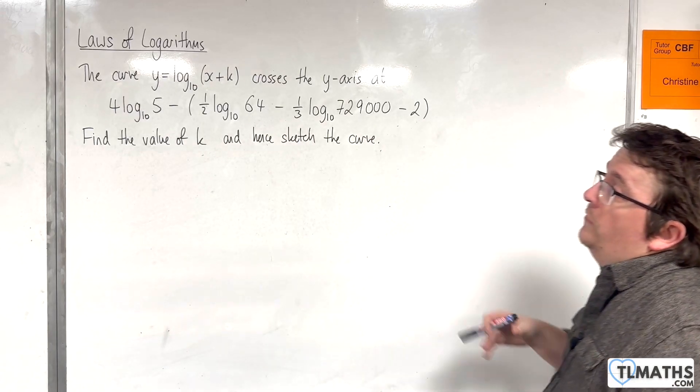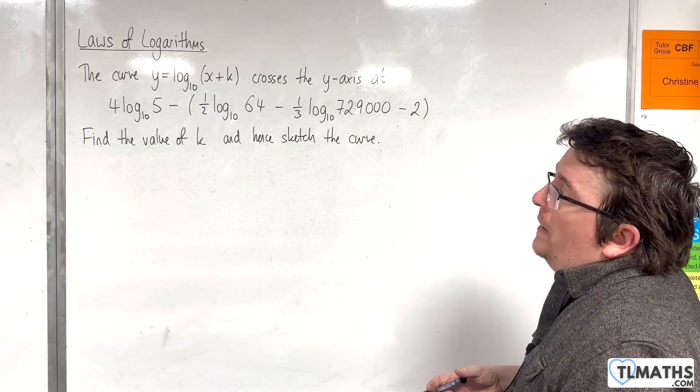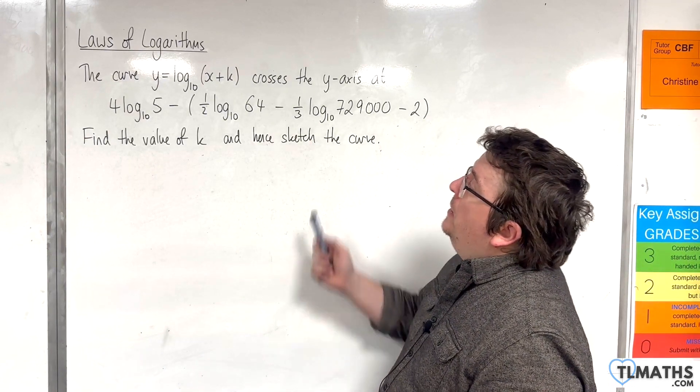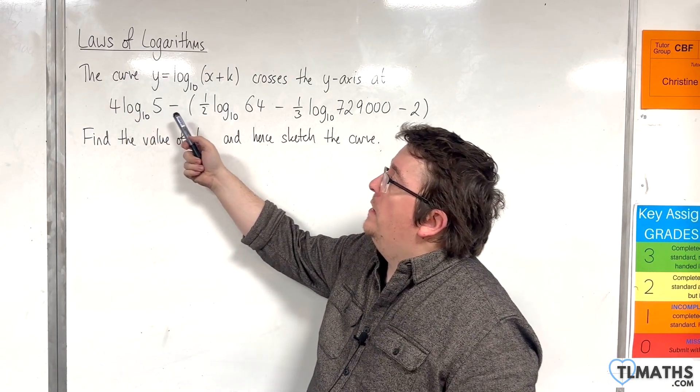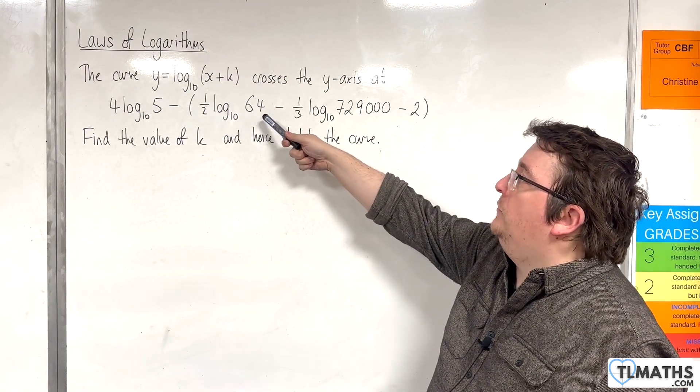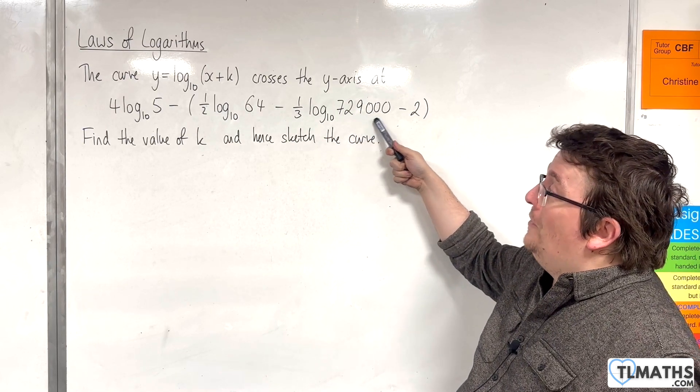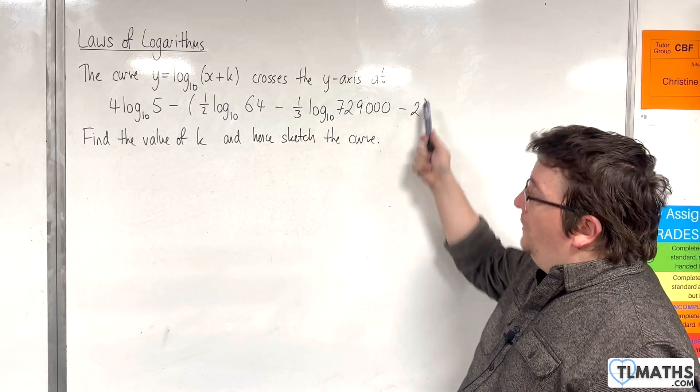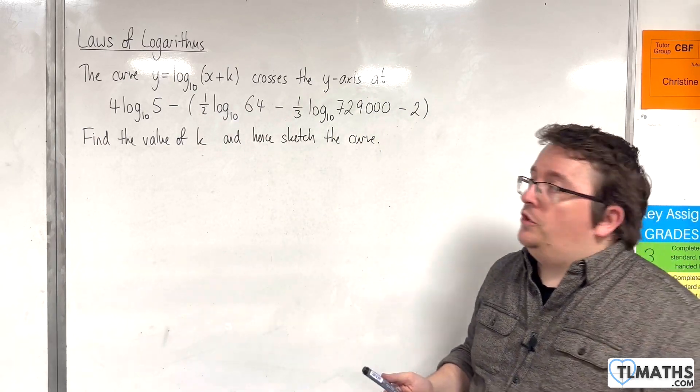In this video we're going to go through this example where we have the curve y equals log base 10 of x plus k crosses the y-axis at 4 log base 10 of 5, take away open bracket 1 half log base 10 of 64, take away 1 third log base 10 of 729,000, take away 2, close the bracket. Find the value of k and hence sketch the curve.